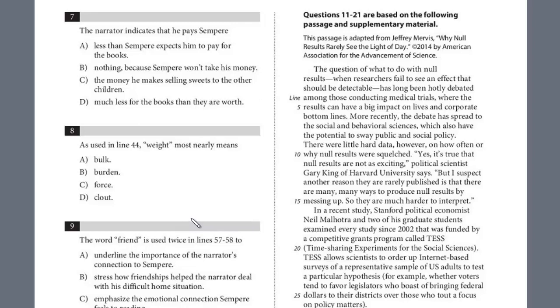In this lesson, we'll continue our view of Reading Test 8, Section 1. We're now on the second passage out of five. This is the social science passage. This is adapted from Jeffrey Mervis, Why Null Results Rarely See the Light of Day, published in 2014 by the American Association for the Advancement of Science.